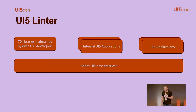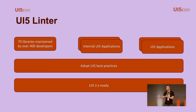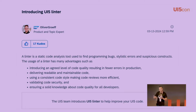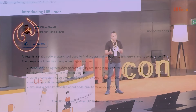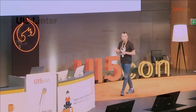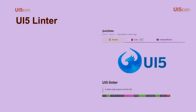Currently there are maybe 70 libraries maintained by over 400 developers in the UI5 world internally, and there are many internal as well as many external applications — awesome applications you've built. We were wondering: how can we help you enforce best practices, the UI5 best practices, and furthermore, how to prepare your projects easily for UI5 2.0? The answer is UI5 Linter.